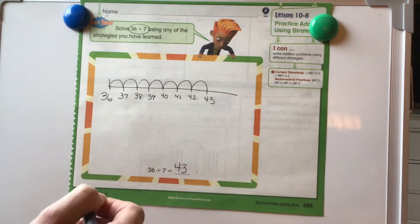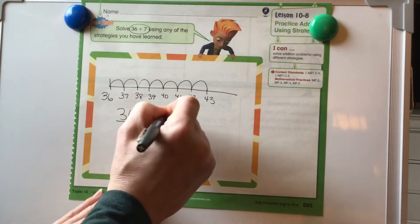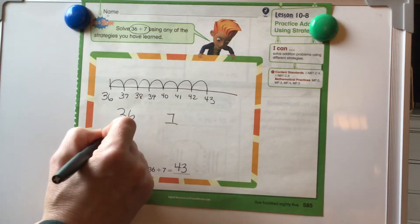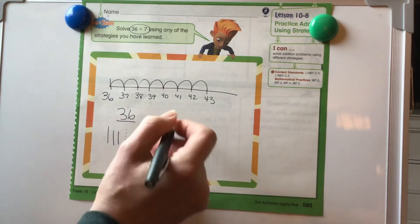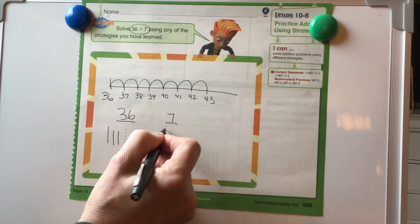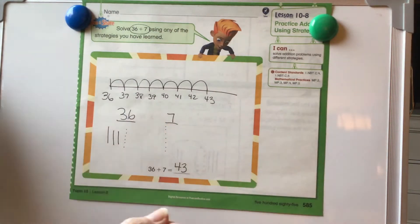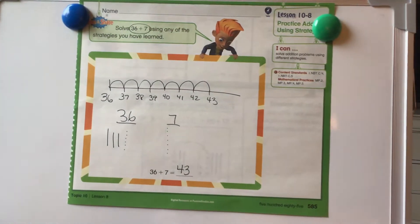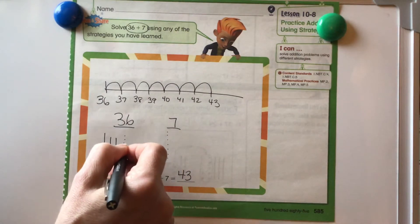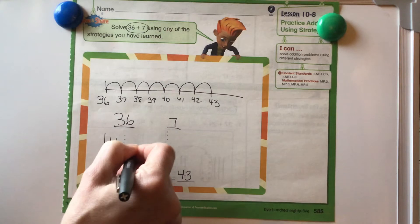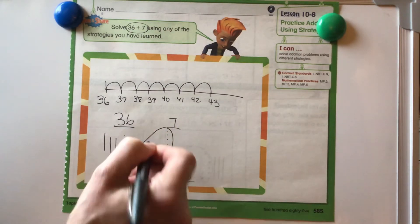We've also learned how to add using place value blocks. We could show 36: 10, 20, 30, 31, 32, 33, 34, 35, 36, and 7: 1, 2, 3, 4, 5, 6, 7. Now let's see if we can make a bundle of 10. We have 7 here — 7, 8, 9, 10. So we'll take 3 from the 36 and add them here, and that becomes a bundle of 10.